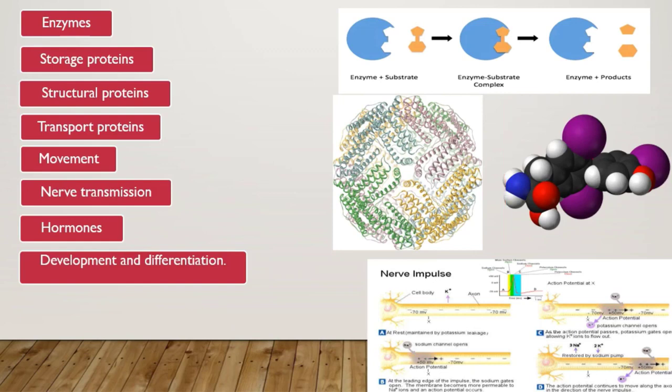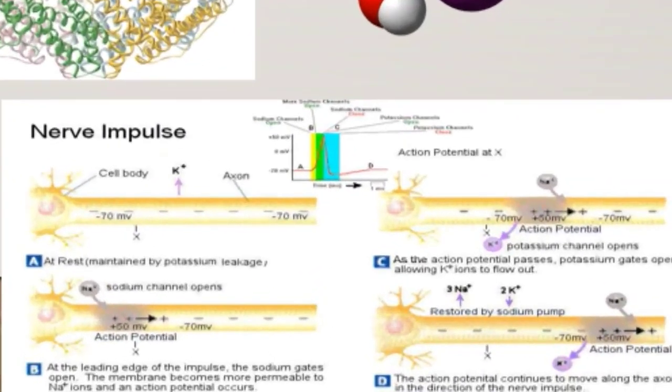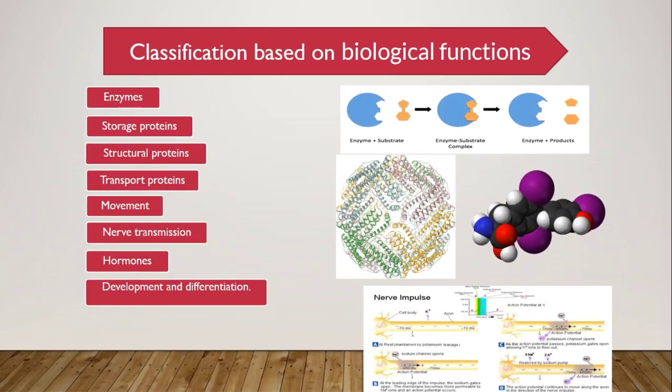Transport proteins کا کام body میں مختلف molecules کی movement کروانا ہے. آگے وہ proteins جو کہ movement provide کرتی ہیں جیسا کہ actin اور myosin، جو کہ muscle contraction اور muscle relaxation میں اہم کردار ادا کرتی ہیں. کچھ proteins nerve transmission کے لیے ضروری ہیں. اسی طرح hormones بھی proteins ہیں جو کہ مختلف biological functions perform کرتے ہیں body میں. اس کے علاوہ کچھ proteins ایسی ہیں جو developmental اور differentiation processes میں اہم کردار ادا کرتی ہیں.